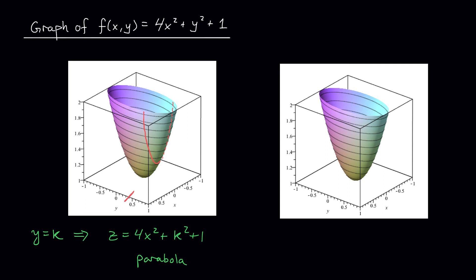Okay, let's check out the other tracings, what we get by setting x equal to k. My curve is then given by z equals y² plus 4k² plus 1. The 4k² plus 1 term is just a constant. So once again, we have a parabola, a parabola in the y-z plane. Sure enough, if I make a cut along the x-axis and I trace out the resulting curve, what do you know? It's a parabola.